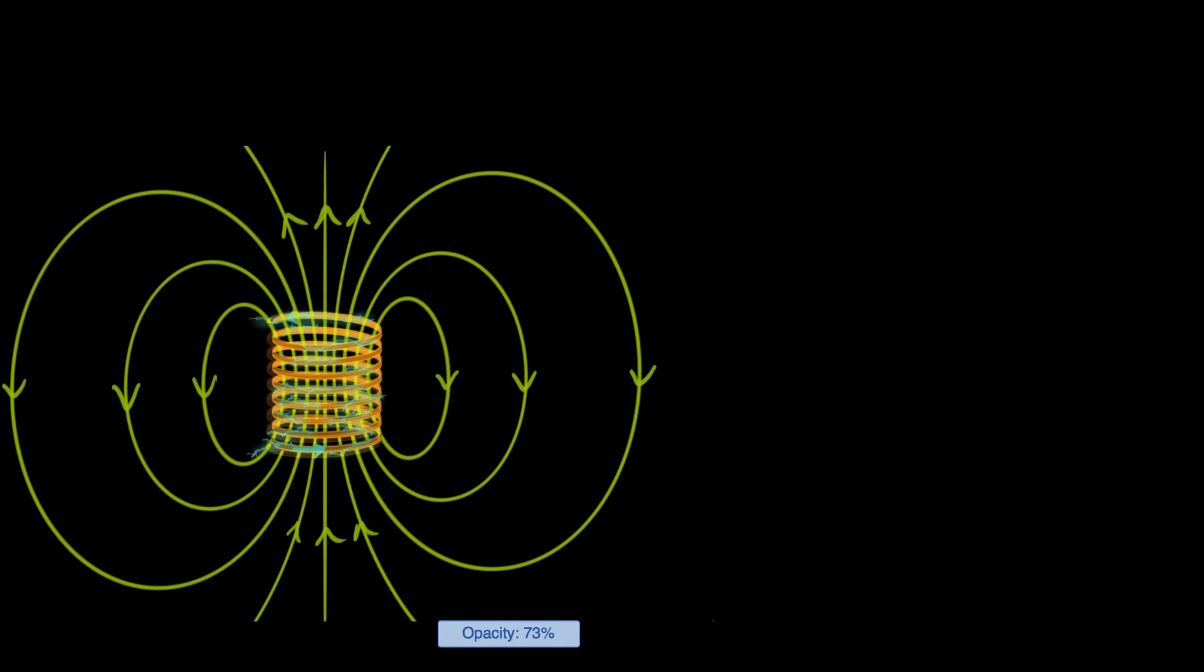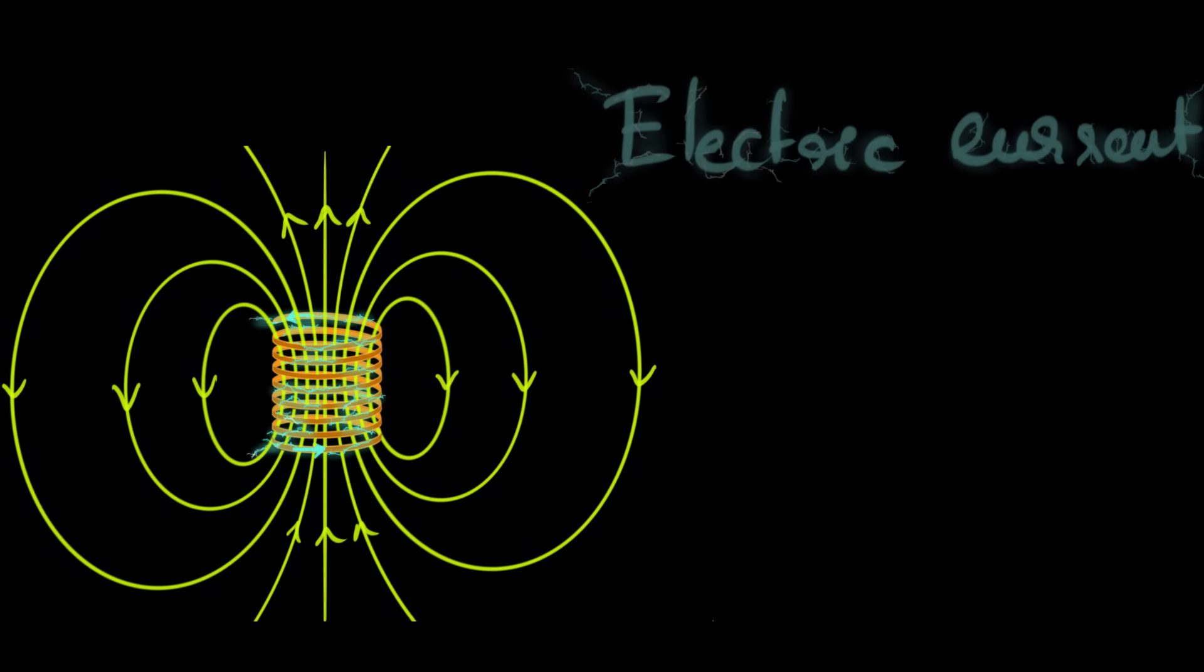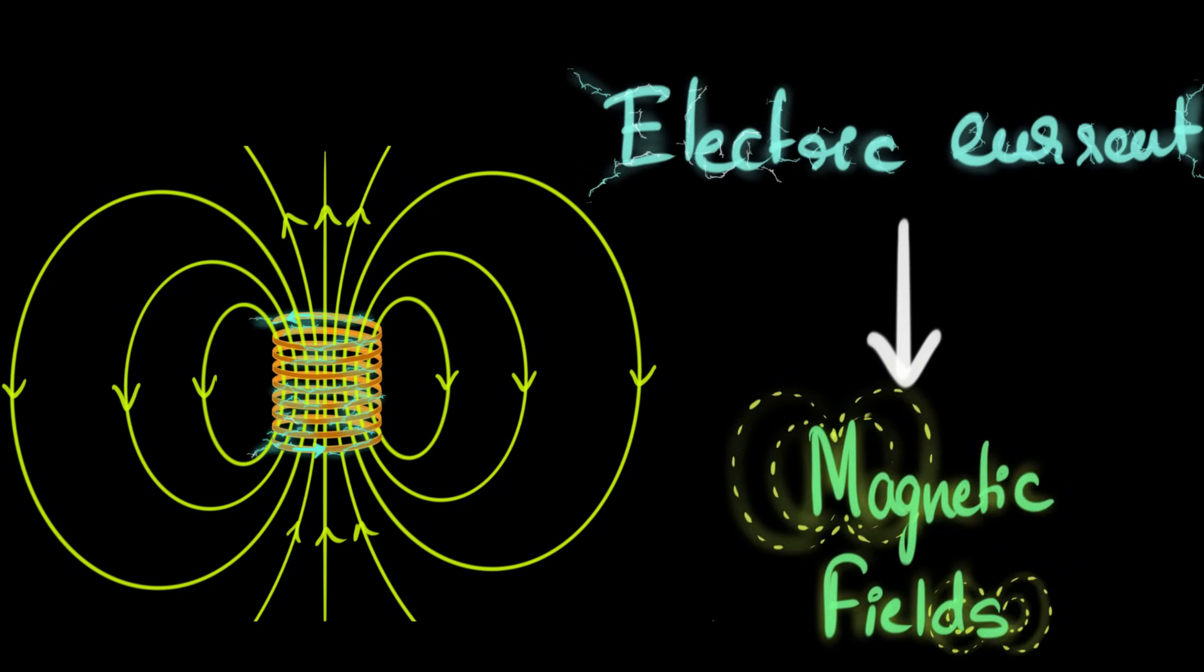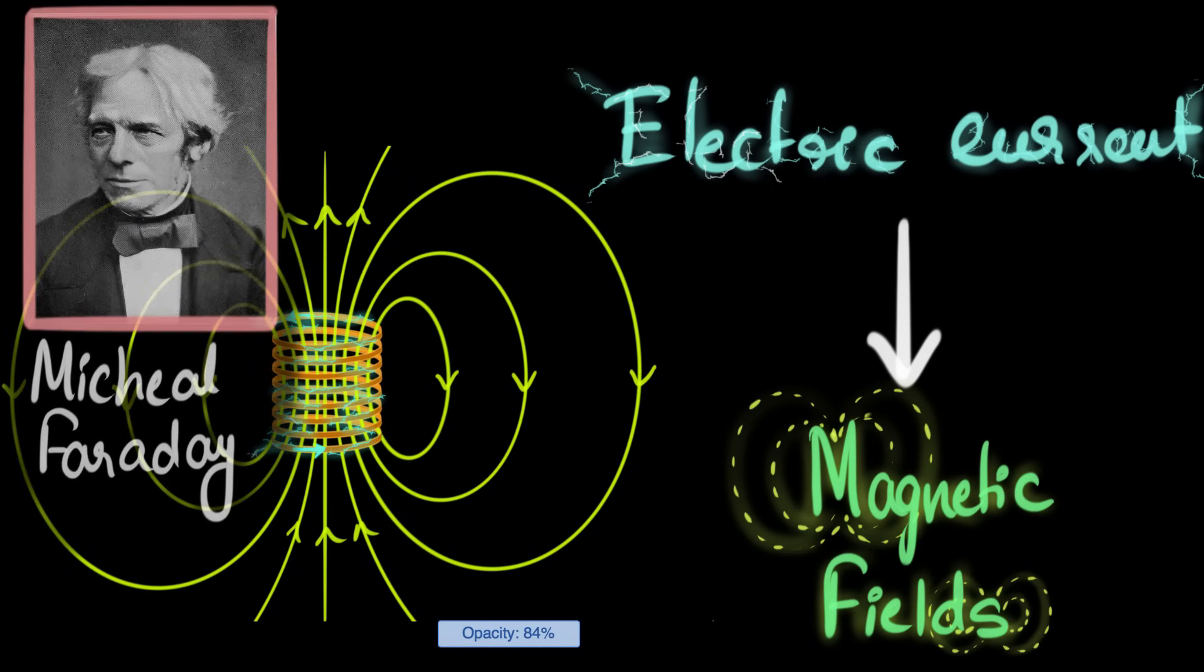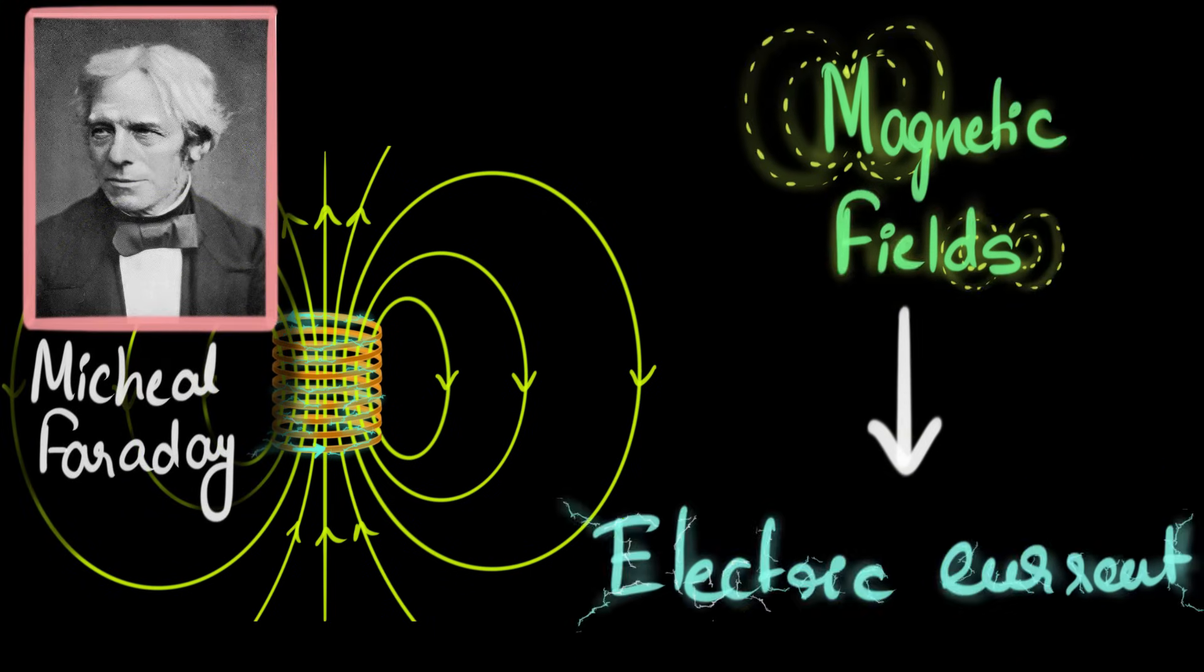We have already seen that if you pass a current through a coil, it generates a magnetic field around it, like a bar magnet, which means an electric current can give us magnetic fields. But a curious man named Michael Faraday wondered whether the reverse was possible. Could magnetic fields create electric currents? Because if the answer is yes, then it's huge because we would have found a new way to create electric current without using any batteries or chemicals, just by using magnetic fields.